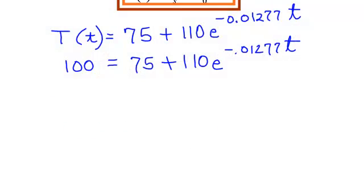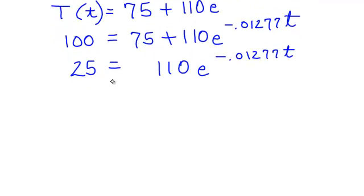I need to do a little algebra here. I am trying to solve for this t. So this is an exponential equation, logarithmic equation. Subtract 75 from both sides. You should get 25. Divide both sides by 110. So on the left, I will have 25 over 110. And on the right, when I divide that side by 110, they will cancel out. I will have e to the negative point 01277 t.